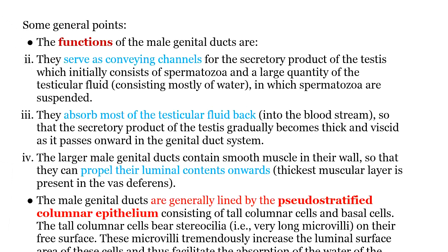In the wall of the larger ducts, smooth muscle begins to appear, first in a small quantity, and as the ducts become larger the amount of smooth muscle in the wall becomes more and more, and is thickest in the vas deferens. The purpose of this smooth muscle is to contract to propel the contents present in the lumen of the duct onwards, because they are finally to be expelled from the body. Smooth muscle, wherever it is present, produces peristaltic rhythmic smooth contractions. This involuntary muscle appears in the wall, and as the ducts become larger, the amount of smooth muscle increases.